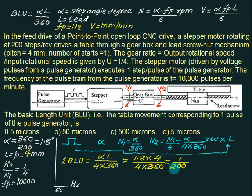So this answer comes out to be 1 by 200 mm, multiplied by 1000 will be microns. So this will be 5 microns. So this choice is correct.